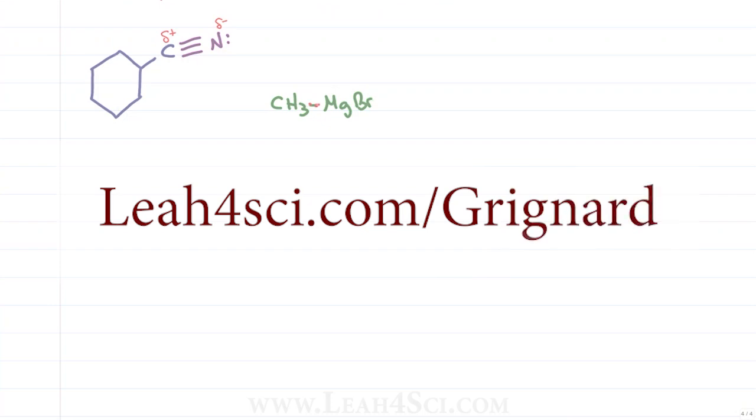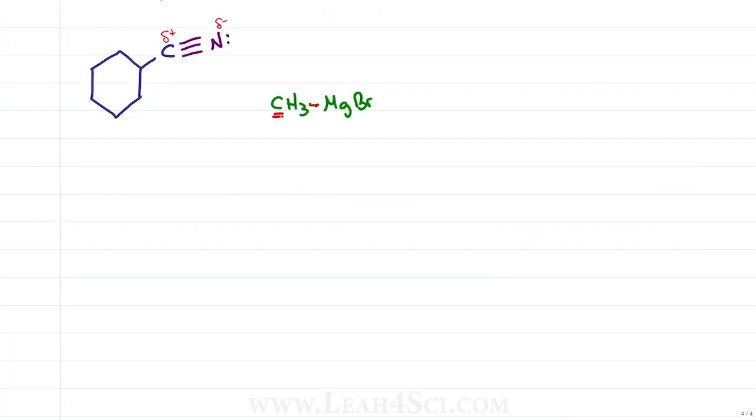The Grignard carbon is very nucleophilic and it's looking for positive charge and so the electrons between carbon and magnesium will reach for that partially positive carbon atom forming too many bonds and so kicking out the first bond between carbon and nitrogen.